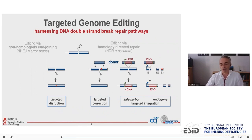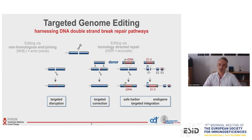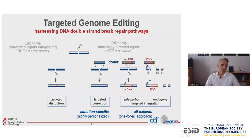When we look at the targeted integration approach, we have to distinguish between targeted integration of a whole expression cassette into a safe harbor locus, or we can target the gene of interest itself and integrate a cDNA into exon 1, just downstream of the ATG translational start codon, with the advantage that our cDNA is now under control of the endogenous promoter. The approach on the right can be used for many or all patients in a specific disease group, while correcting the point mutation is a highly personalized approach that is mutation-specific, requiring a new nuclease and donor design for every single mutation.